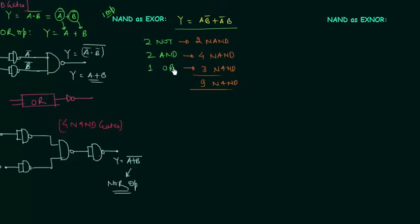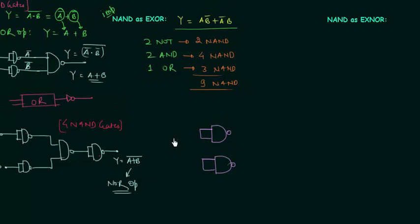First we will implement the two NOT gates. We will make two NAND gates and provide similar inputs to these two NAND gates so that they work as NOT gates. This input is A and this input is B. Now we will implement the two AND gates.